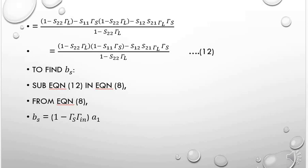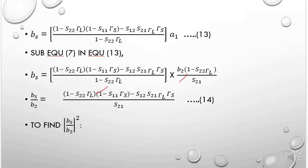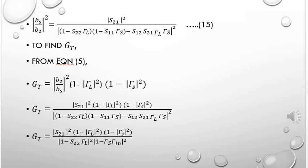With (1 minus S22·gamma_L) common for the first two terms, substituting this expression back into equation for bs, we get bs equals (1 minus gamma_s·gamma_in) times a1. After simplification, BS/B2 whole squared equals |S21|² divided by |(1 minus S22·gamma_L)·(1 minus S11·gamma_s) minus S12·S21·gamma_L·gamma_s|².